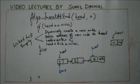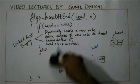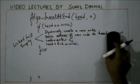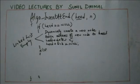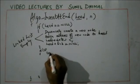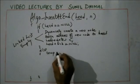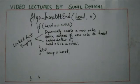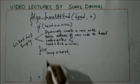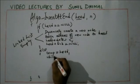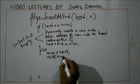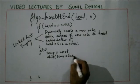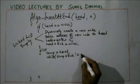For doing this, we run a while loop. We make a new pointer temp pointing to head. Then while temp's link is not equal to null, we do something. So if temp's link is not null, it means we are not at the last node yet, so we make temp point to the next node.